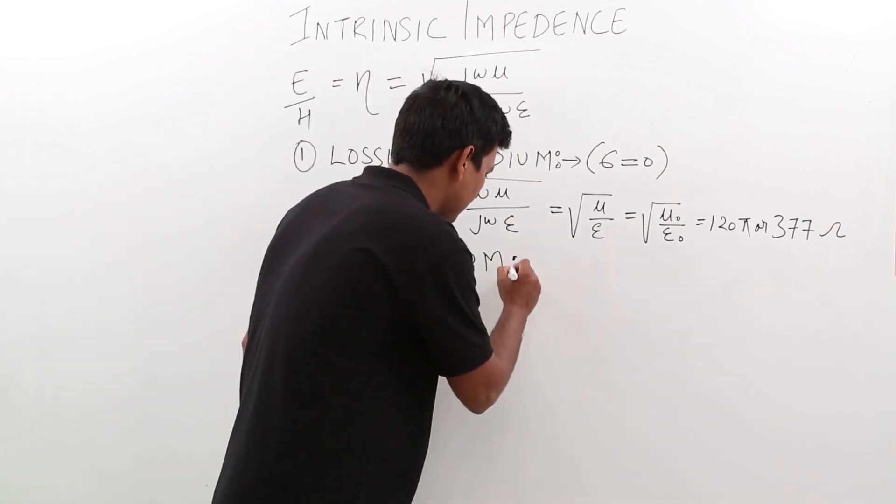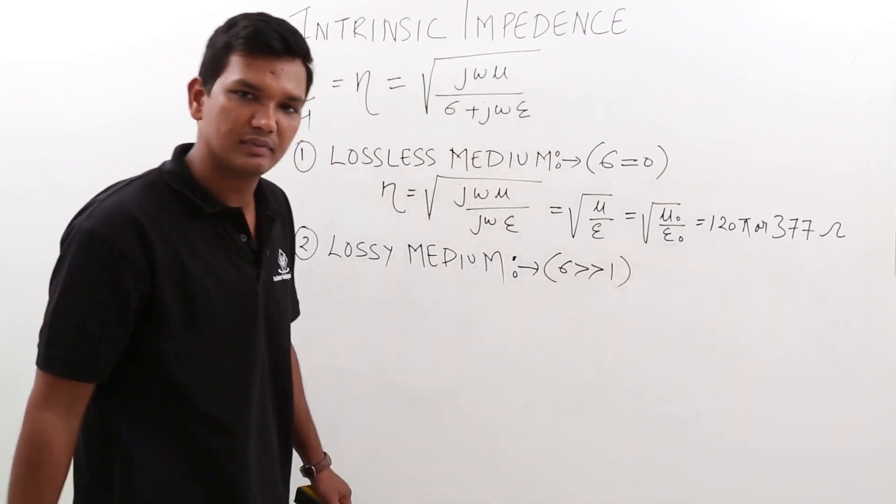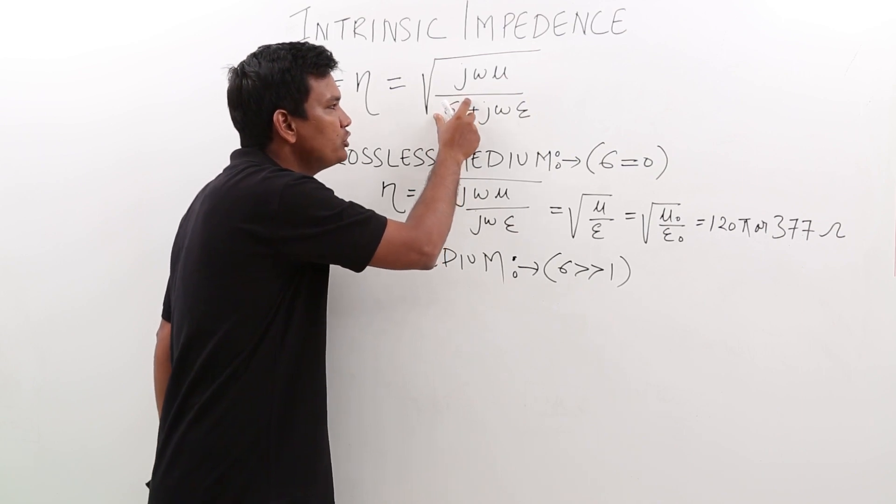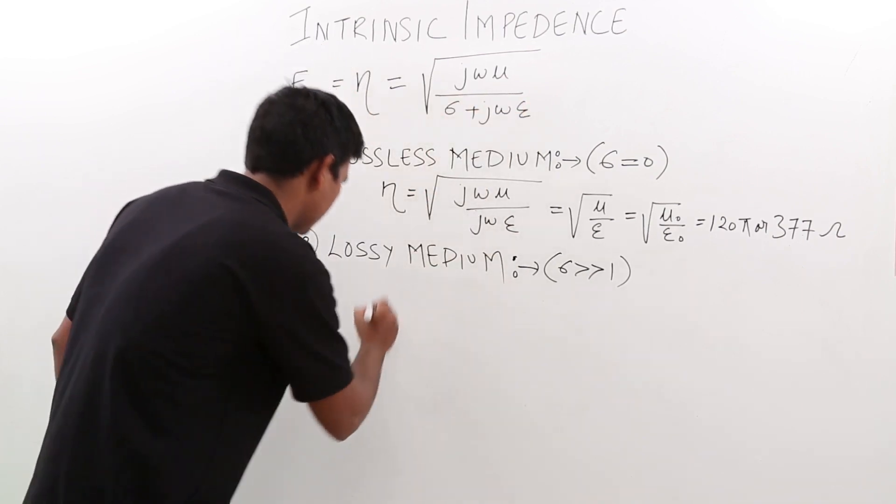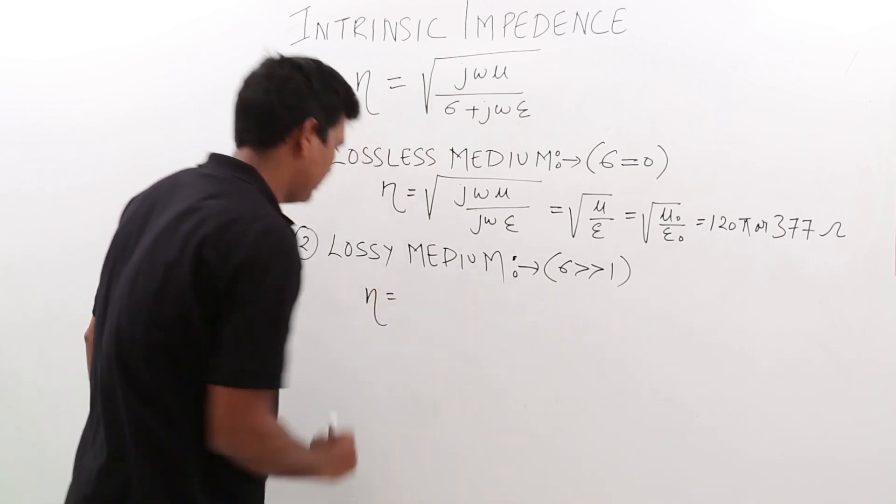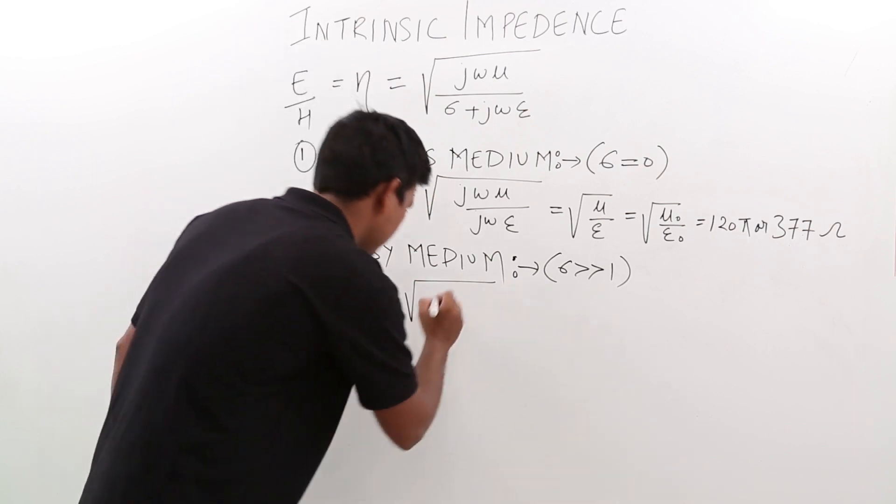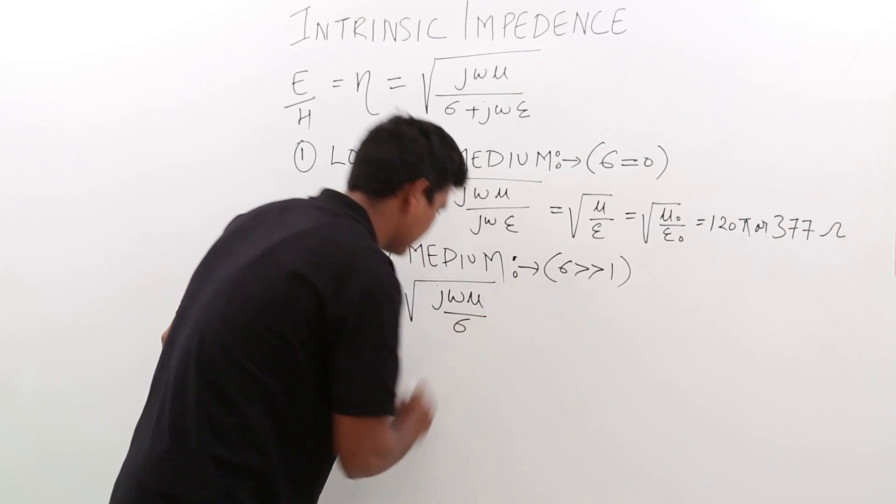If sigma is very high, can I say this quantity will be huge? If this quantity is huge, I can neglect this term. So if I rearrange this equation, eta would be j omega mu by sigma.